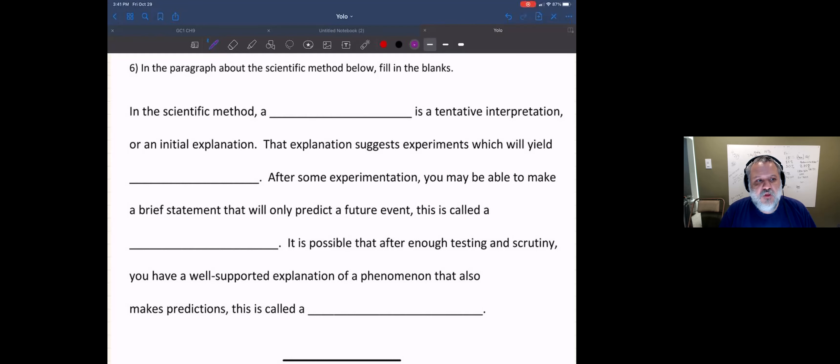So let's take a look. In the scientific method, a blank is a tentative interpretation or an initial explanation. Well, a tentative interpretation or an initial explanation is a hypothesis. And so that's what goes there in that blank.